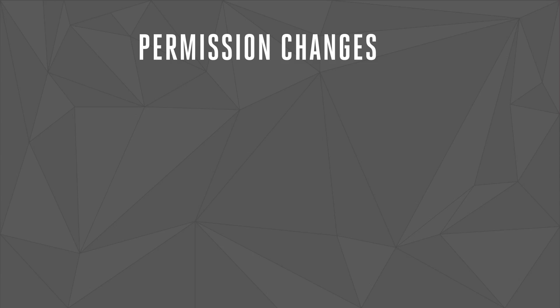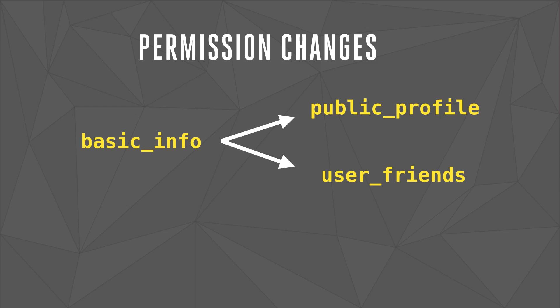Let's start with permissions. In V1, a single permission called BasicInfo gave your app access to the user's identity as well as their friends list. In V2 and above, we've split this into two permissions: public profile and user friends. The public profile permission grants you access to a person's identity, including their name and profile picture. This permission is included by default on every login on the web, but on iOS and Android you must request public profile explicitly. If you want to access the user's friends, you must now specify the user friends permission, along with any other permissions you'd like to request.